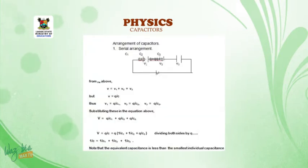Arrangement of capacitor. We have two types of arrangements: serial arrangement and parallel arrangement. Number one, serial arrangement. Consider the diagram below. We have three capacitors arranged in series: C1, C2, C3. Where we connect the negative terminal of C1 to positive terminal of C2, and negative terminal of C2 to positive terminal of C3. And then each of them are having voltage of V1, V2, V3, and the voltage of the main source is V. From the above, V from the source of the battery will be equal to V1 for capacitor 1 plus V2 for capacitor 2 plus V3 for capacitor 3.